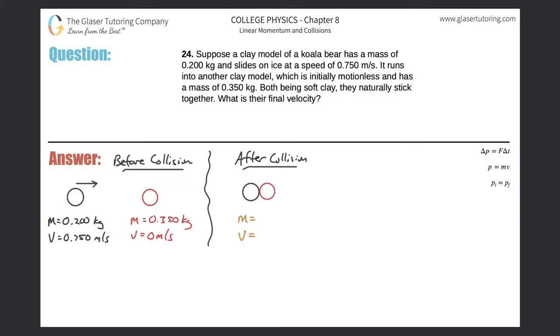Number 24. Suppose a clay model of a koala bear has a mass of 0.2 kilograms and slides on ice at a speed of 0.75 meters per second. It runs into another clay model which is initially motionless and has a mass of 0.35 kilograms. Being soft clay, they naturally stick together. What is their final velocity?